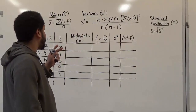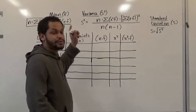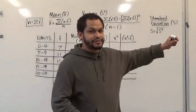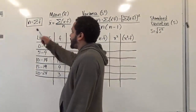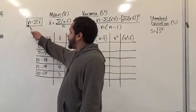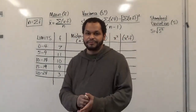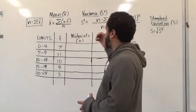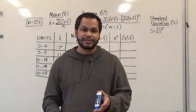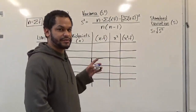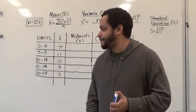Secondly, we want to know how many decimal places we will be rounding each of these values. And thirdly, the most important of these is what the value of n is. N represents the sum of the frequencies, so it gives us the total number of samples for calculating the mean, standard deviation, and variance. These are the most important things to figure out before you start.